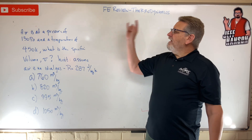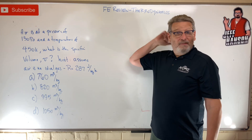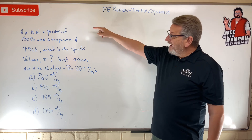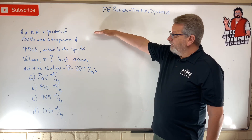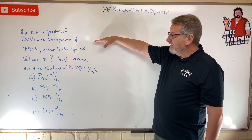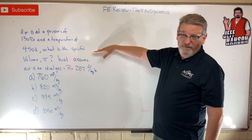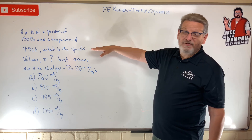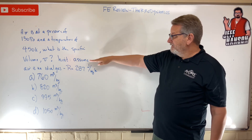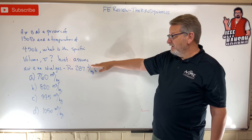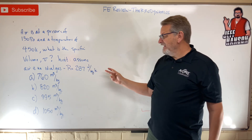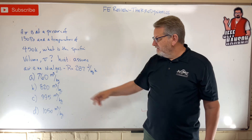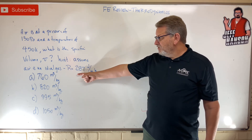Welcome back. FE review problem — thermodynamics. Air is at a pressure of 130 pascals and a temperature of 450 Kelvin. What is the specific volume? Assume air is an ideal gas, and we're given the ideal gas constant for air.